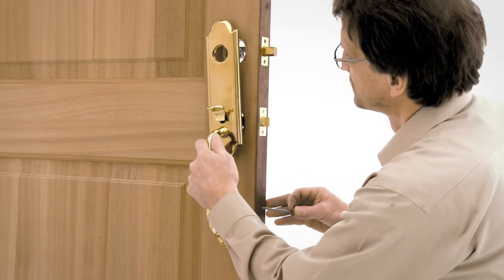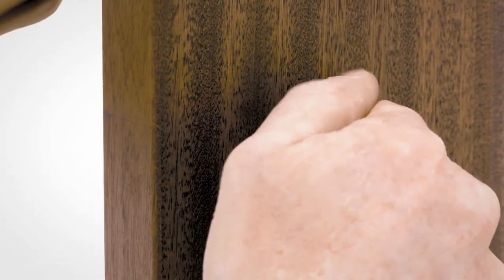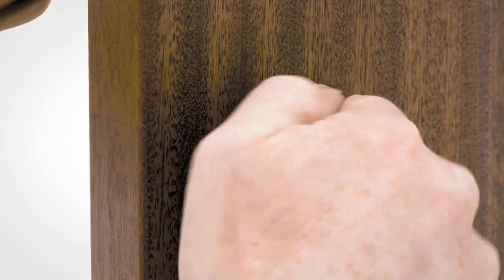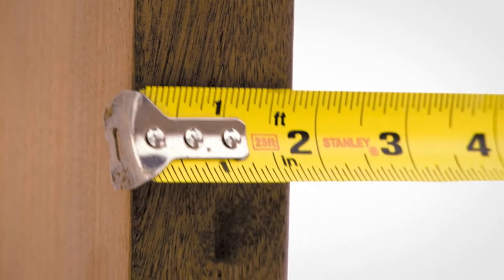Attach handle by inserting the 10-32 by 2-1/2 inch pan head screw on inside of the door through screw base and the lower hole. Leave screw loose for adjustment. Measure the thickness of your door.